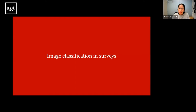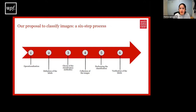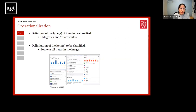How to deal with image classification in the frame of surveys? We propose a six-step process: step one, operationalization; step two, definition of the labels; step three, choice of the classification method; step four, collection of the images; step five, performing the classification; and step six, verification of the labels.